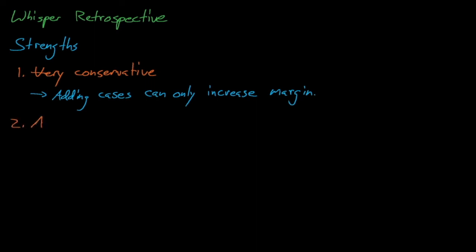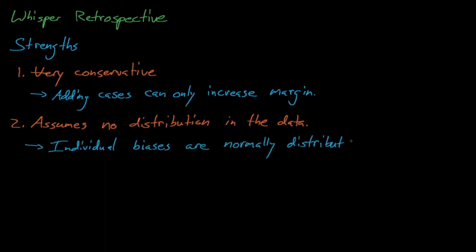Another advantage is that whisper assumes nothing about the distribution of the set of benchmark experiment biases, only that individual bias distributions follow a normal distribution.